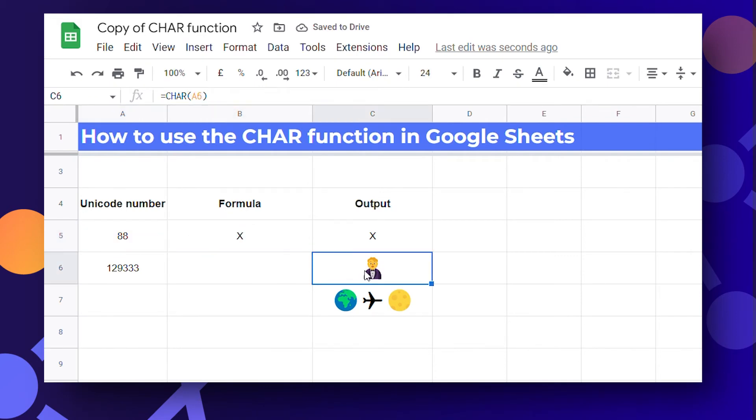If you want to add any emojis just get the code for your emoji and use the char function. Write char and your code and emoji is added.